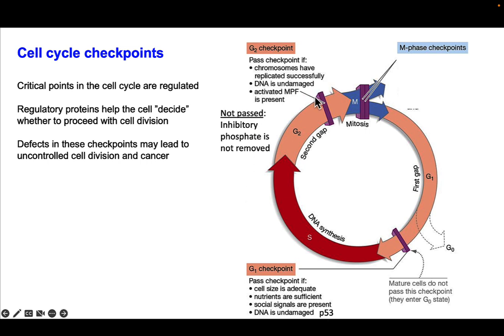The next checkpoint happens at the end of G2. In this checkpoint, the cell checks whether chromosomes have replicated successfully, whether the DNA is undamaged, and whether MPF is present. If chromosomes have not replicated successfully or the DNA is damaged, the inhibitory phosphate on CDK is not removed and the cells do not enter M phase.